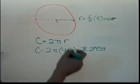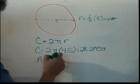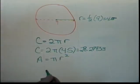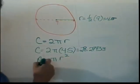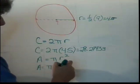What about finding area? Well, the formula for the area of a circle is A equals pi times the radius squared. So once again, we're just going to plug in the radius that we found, 4.5, and we will have area equals pi times 4.5 squared.